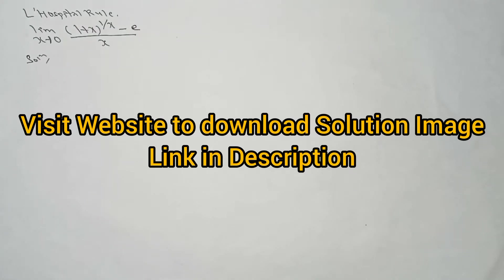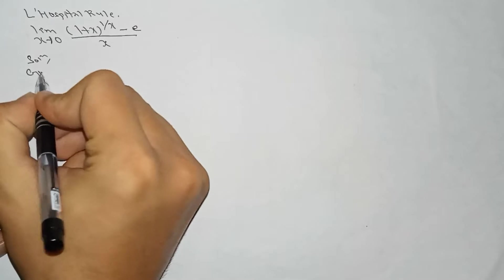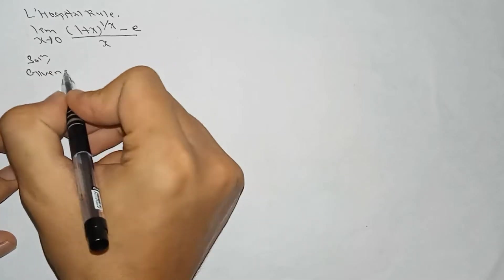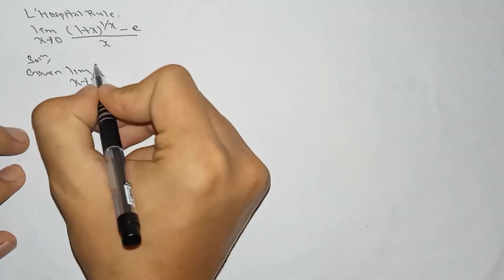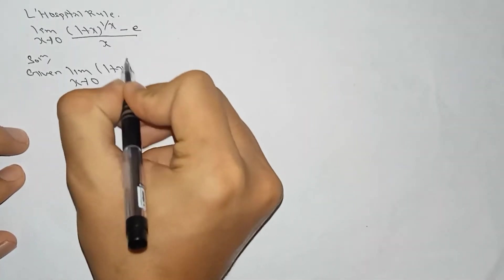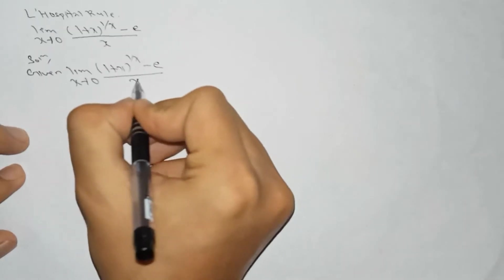Hello guys, welcome to my channel and don't forget to subscribe to the channel. Here is the question of L'Hôpital's rule: limit x tends to 0, of [1 plus x to the power 1 by x, minus e] by x.